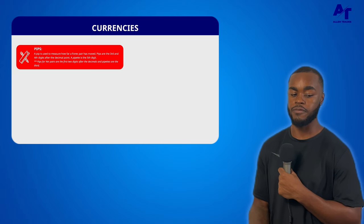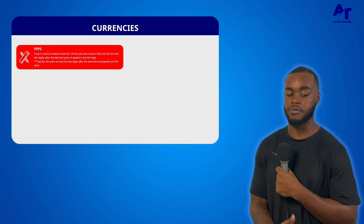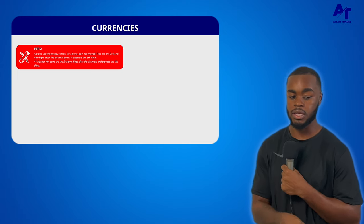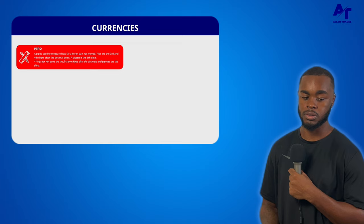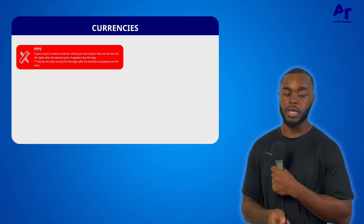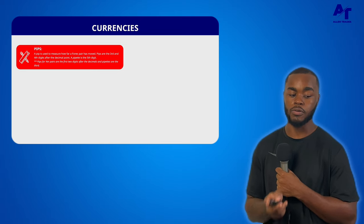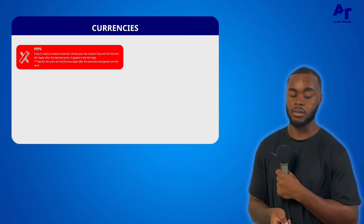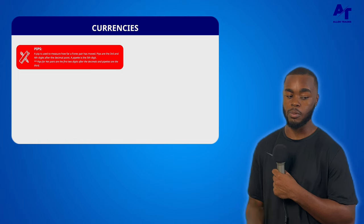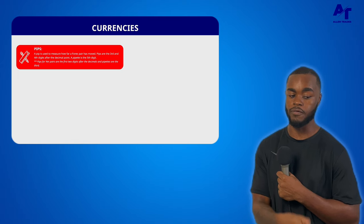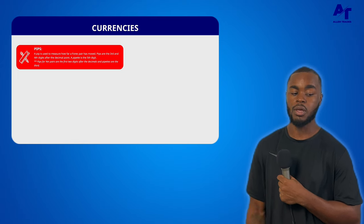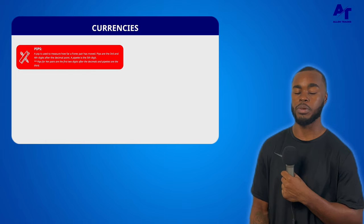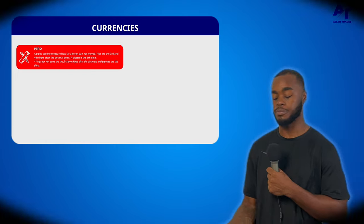Pips are the third and fourth digit after the decimal point, and a pipette is the fifth digit. For yen pairs, pips are the first two digits — unlike any other pair where it's the third and fourth digit after the decimal — and the pipette for the yen will be the third digit.